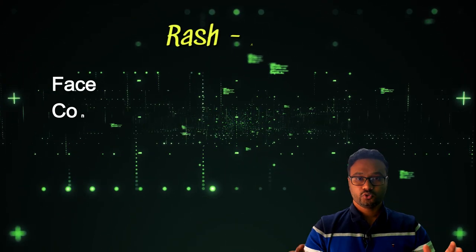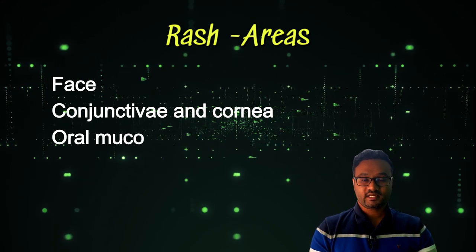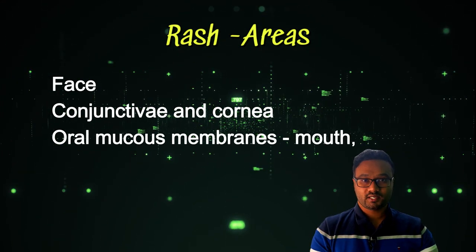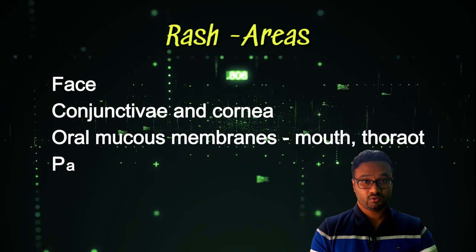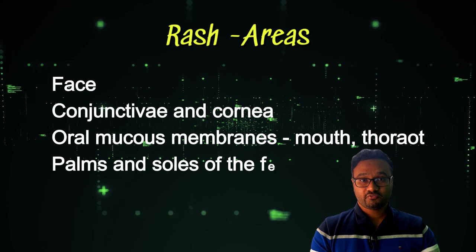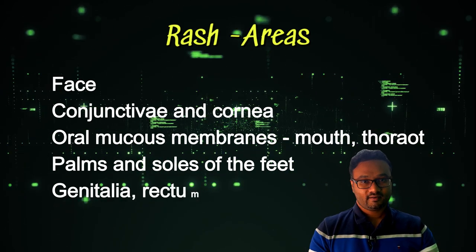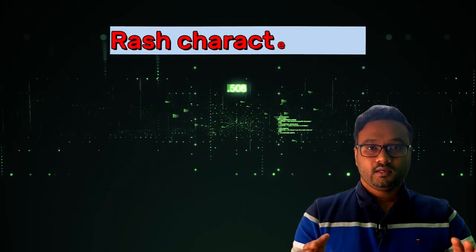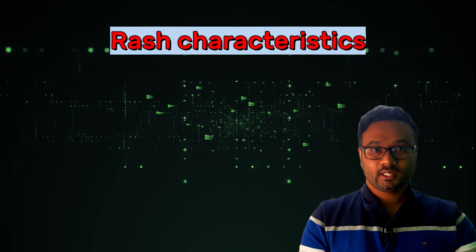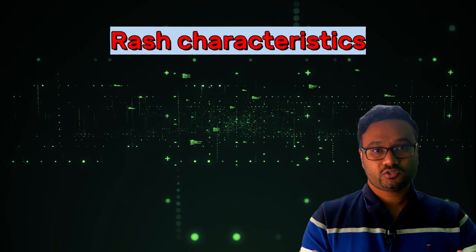The rash can appear on the face, conjunctiva and cornea, oral mucous membranes of the mouth and throat, palms and soles of the feet, genitalia, and rectum. Now let us see how to distinguish chickenpox, measles, and monkeypox from each other.